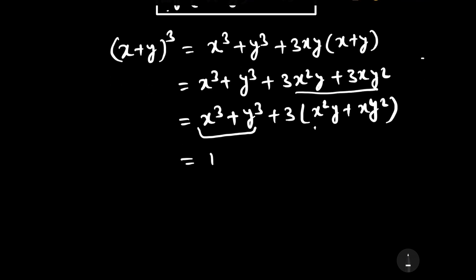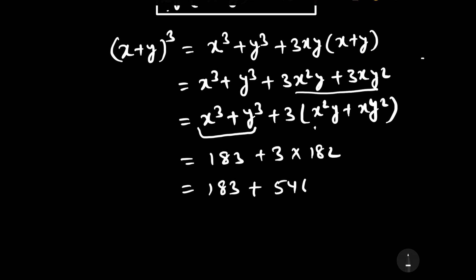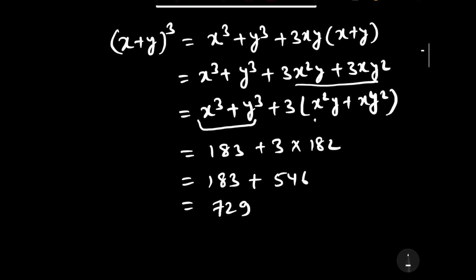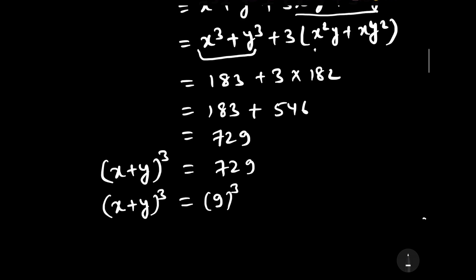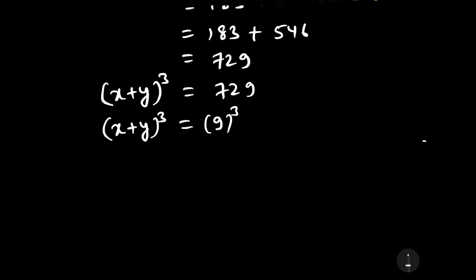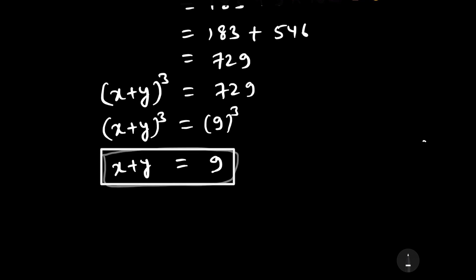Substituting our known values: (x + y)³ equals 183 plus 3 times 182, which equals 183 plus 546, giving 729. Since 9³ equals 729, we have (x + y)³ equals 9³. Taking the cube root of both sides, x + y equals 9.